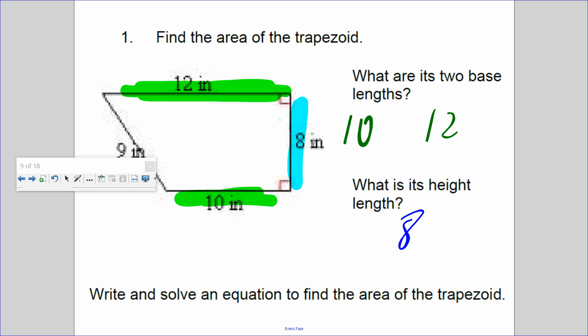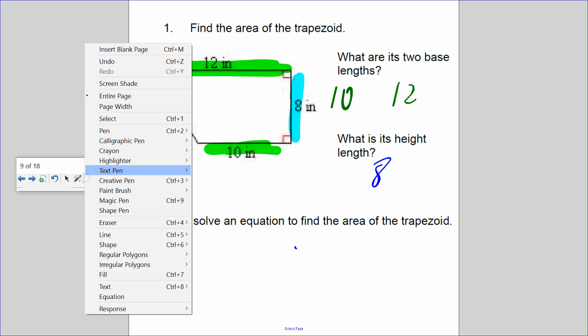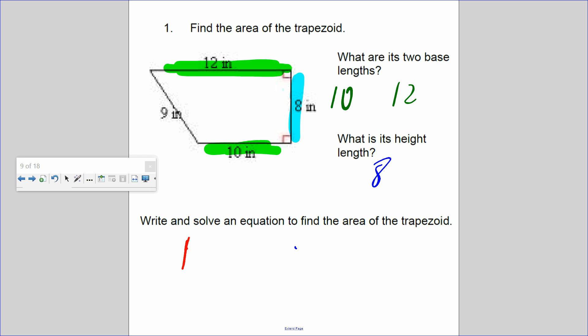Let me get my calligraphy pen. The bases are 10 and 12, and the height is 8. Now, write and solve an equation. So the equation is A equals half of the bases, b1 plus b2, times the height. So I replace b1 and b2 with 10 plus 12, and the height is 8.